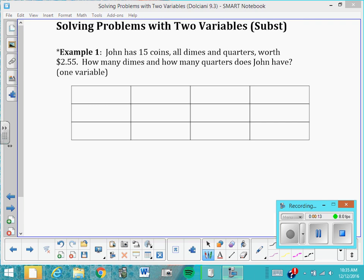So here we have a problem that says, John has 15 coins, all dimes and quarters, worth $2.55. How many dimes and how many quarters does John have?